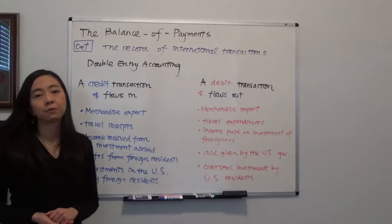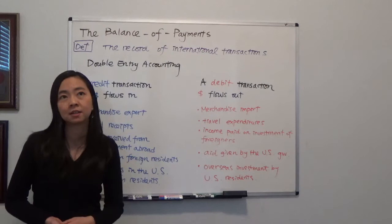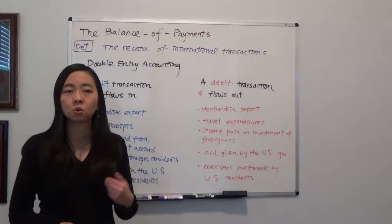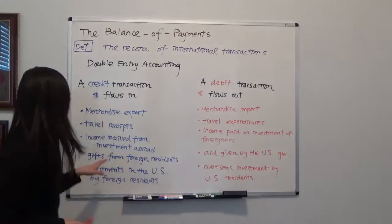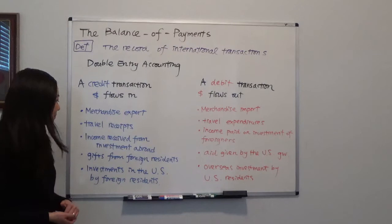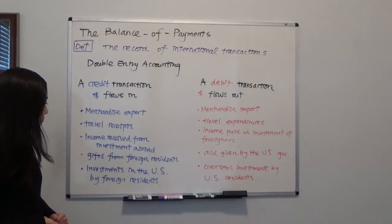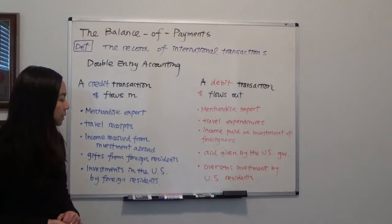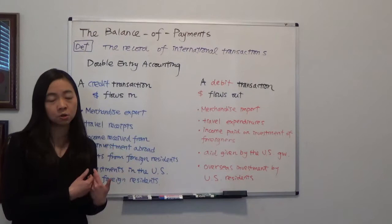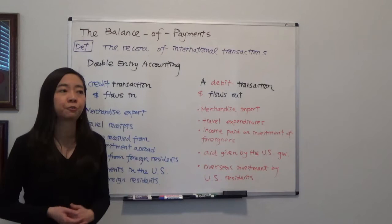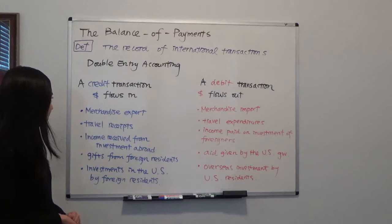Income received from investment abroad is also a credit transaction. For example, if a US resident investor is investing in European bonds or stocks, and when the European firm is paying dividends or interest, money flows in from Europe to the United States. Additionally, gifts from foreign residents are also a credit transaction. Finally, investment in the United States by foreign residents — such as a foreign firm building an assembly factory in Ohio — also brings money flowing from a foreign country into the United States.